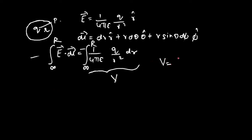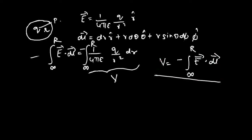So potential can also be found as V = -∫(infinity to R) E · dl. This is the other way of finding potential at point P when the position vector is known. The definition is: potential is the amount of work done in moving a unit positive charge from infinity to R; the minus sign is because of work done against the applied force. Here capital R is a position vector — for example, (1,2,3) or (3,4,5) — unlike the previous case where r was a scalar distance.